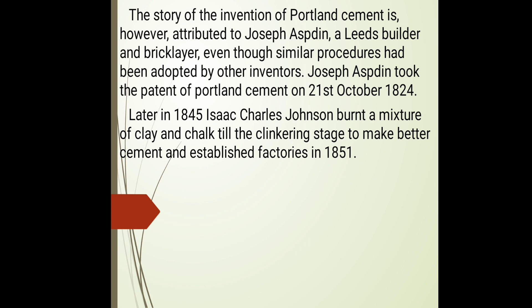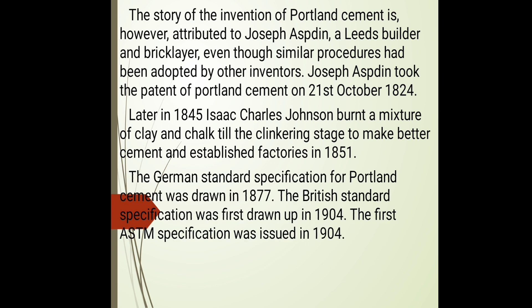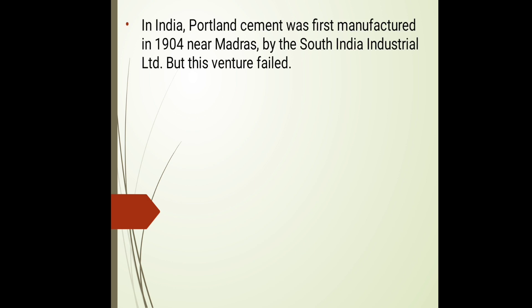By powdering that clinker, the powdered formation of cement is obtained. Charles Johnson established a factory in 1851. The German standard specifications for cement were introduced in 1877, which was the first specification introduced. After that, the British introduced a specification in 1904 for mixes, and the first ASTM specification was also introduced in 1904 for the preparation of concrete.